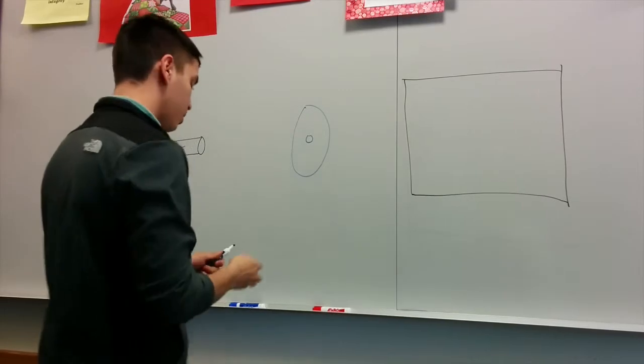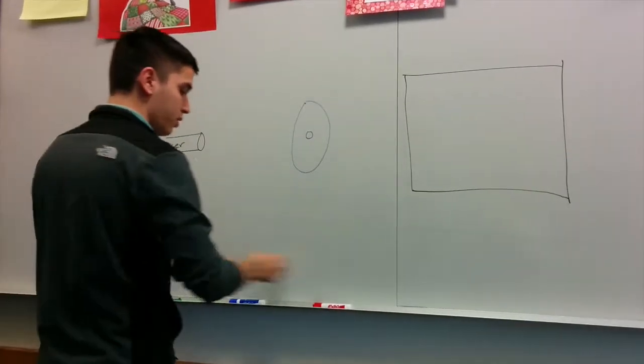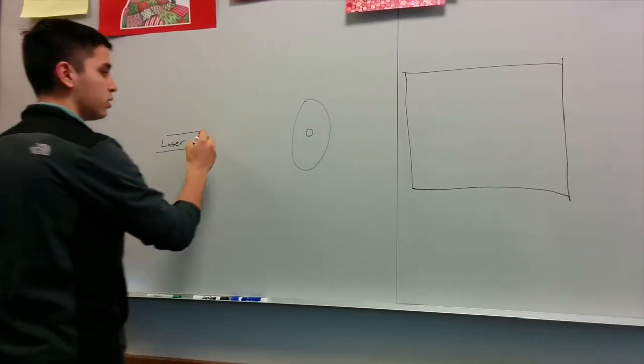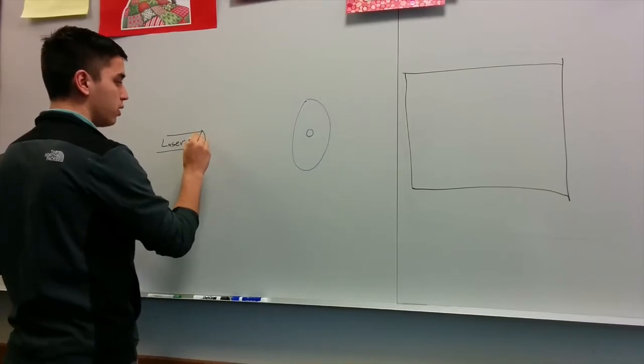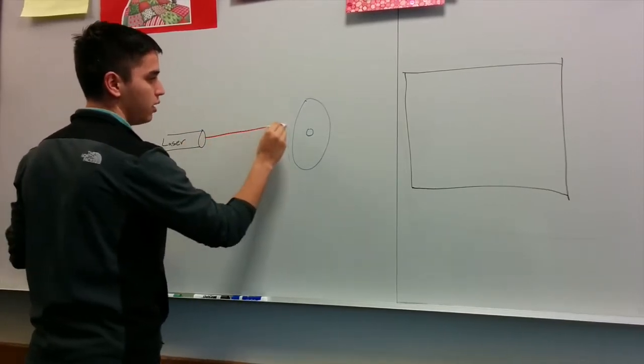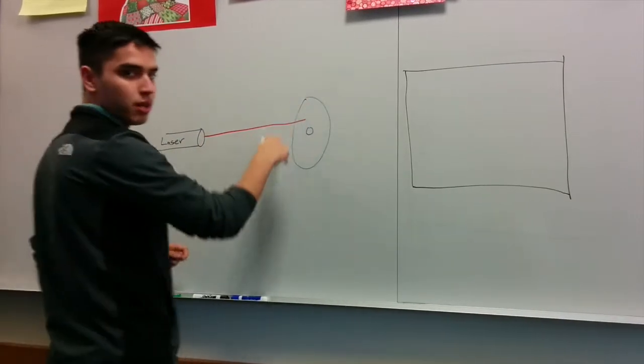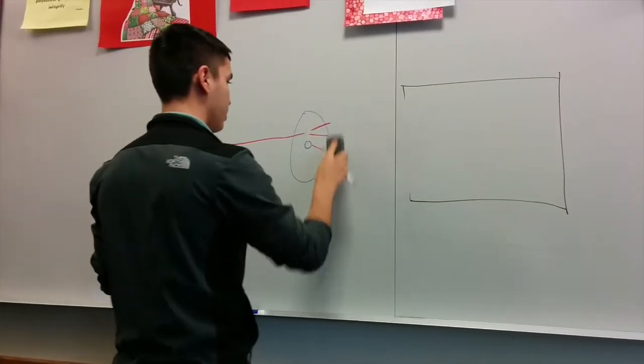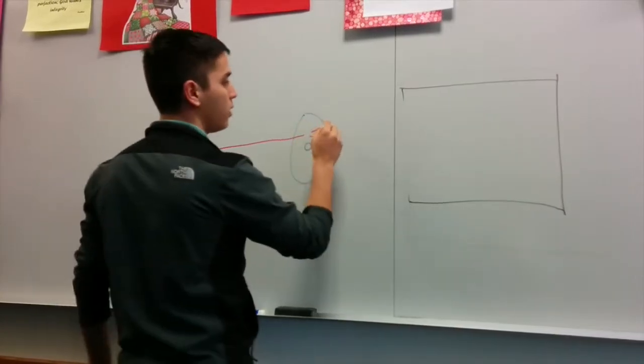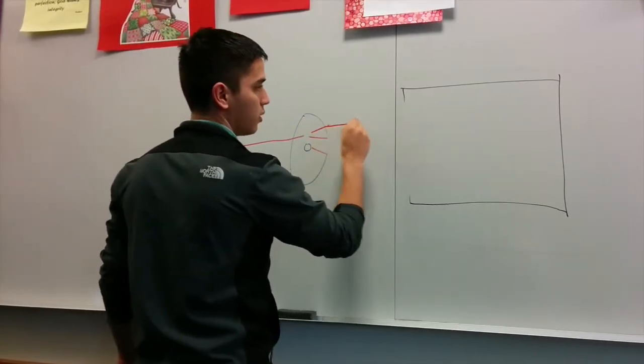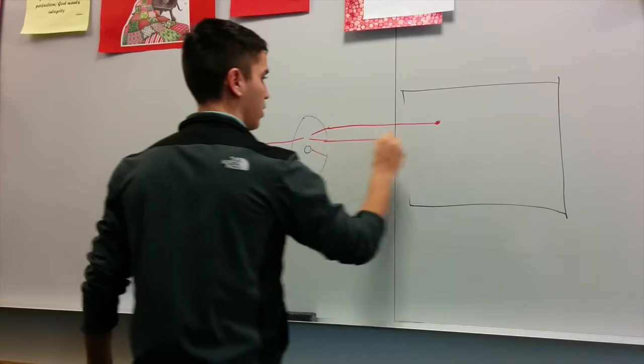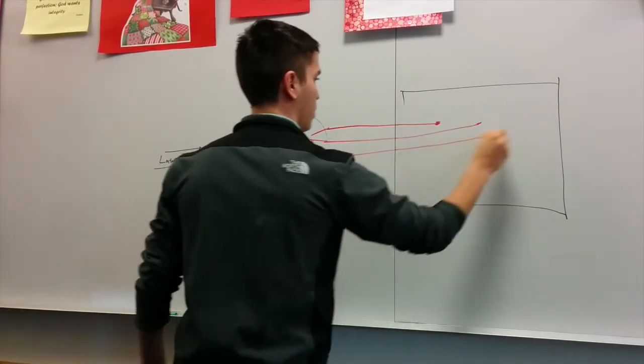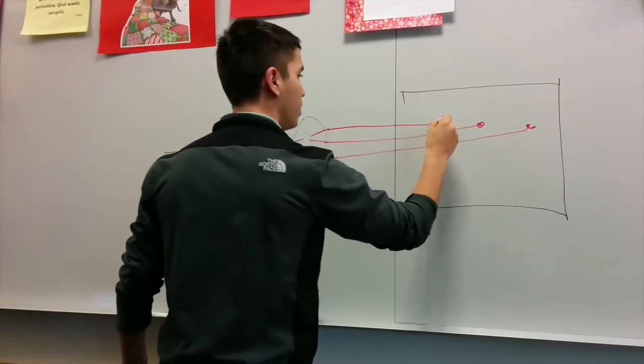Now, the laser emits a light, just one source of light, one ray, which comes into the CD. Once it hits this obstacle, the CD, the CD makes the light diffract into three different points. And that is what you saw on the board.